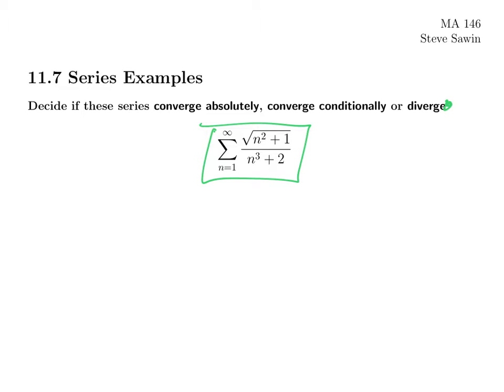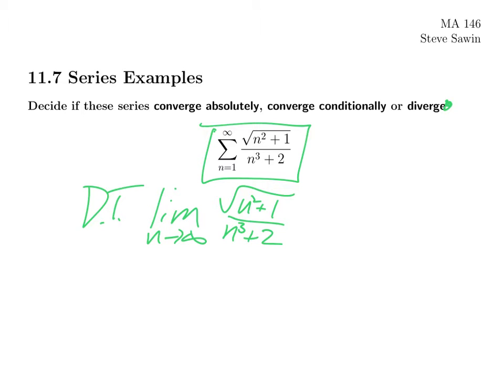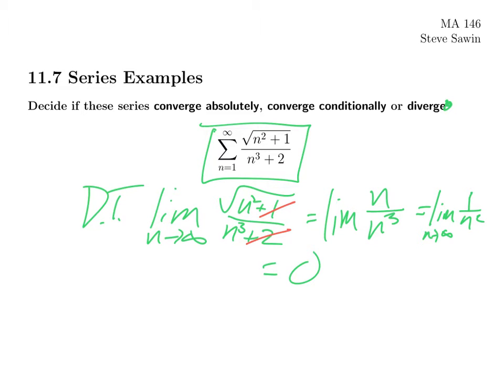So let's look at this one. Notice, first of all, that it's positive. So there is no converges conditionally — it is either going to converge absolutely or diverge. So we go straight to the easy tests. Let's do the divergence test. The limit as n goes to infinity of √(n²+1) / (n³+2). We simplify: n² dominates in n²+1, n³ dominates in n³+2. So this becomes √(n²)/n³ = n/n³ = 1/n², and the limit as n goes to infinity is 0. So the divergence test doesn't tell us anything.